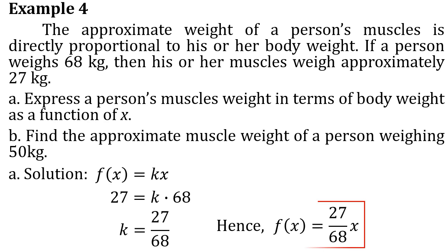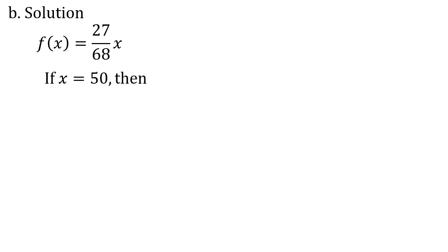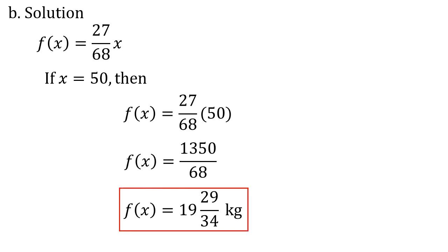For letter B, we find the approximate muscle weight of a person weighing 50 kilograms. Using F(x) equals (27x)/68 with x equal to 50: F(50) equals (27 times 50)/68 equals 1350/68, which equals approximately 19 and 29/34 kilograms. This is our answer for letter B.